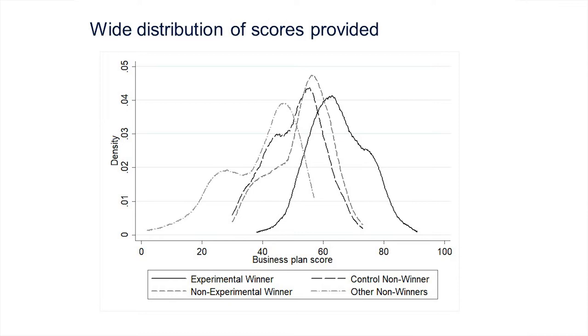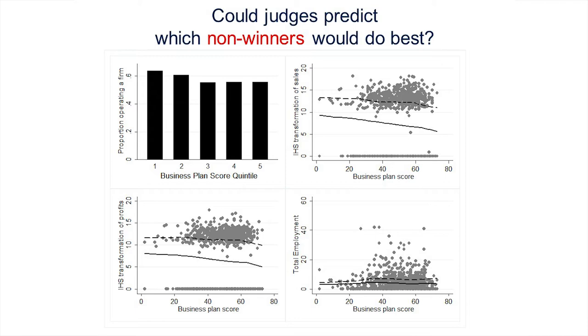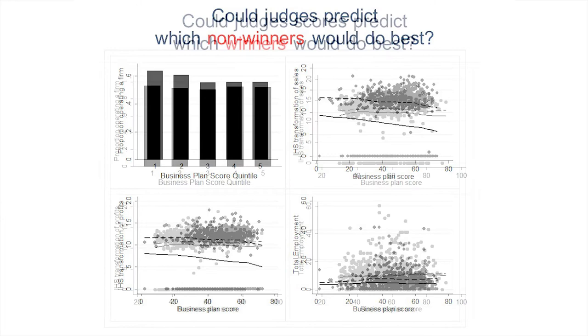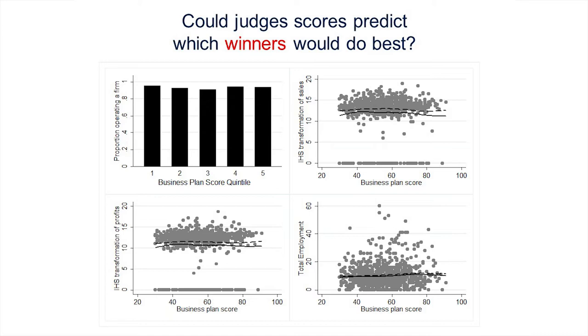So how did the judges do? This graph shows judge scores on the x-axis against outcomes — business survival, sales, profits, and employment. If anything, firms the judges thought would do better actually had less sales, were less likely to be operating, and had lower profits. There's a slight negative correlation between judge scores and actual outcomes, basically near-zero predictive power — both for non-winners and winners.